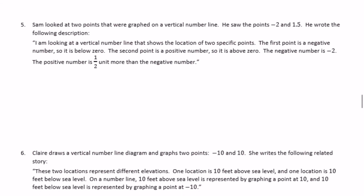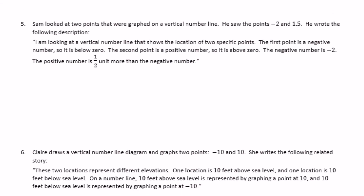Number five. Sam looked at two points on a vertical number line — negative two and one and five-tenths. He wrote: I'm looking at a vertical number line showing two specific points. The first point is negative, so it's below zero — that's true. The second point is positive, so it's above zero — that's also true.